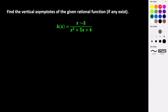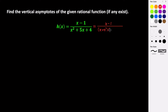Whenever you are trying to find vertical asymptotes it is best to write your rational function in simplest terms, which means we usually want to factor anything that we can. If anything can cancel then we do that, because that gives us a slightly different kind of value. So we can simplify the denominator here. Our numerator is still x minus 1, and the denominator factors to be x plus 4 times x plus 1. Nothing cancels.